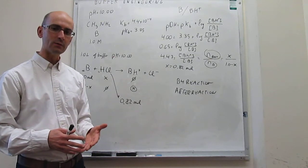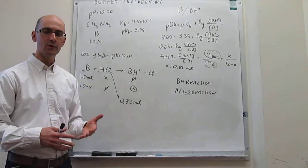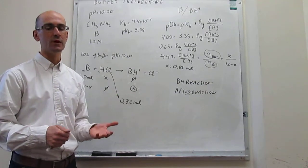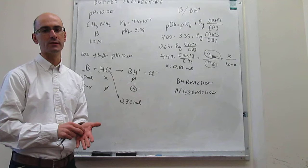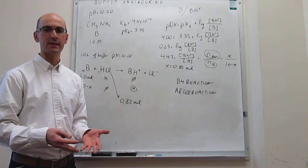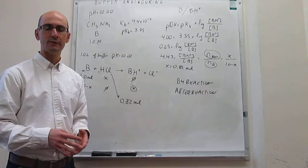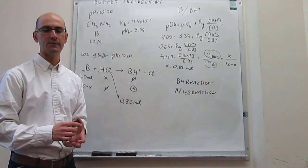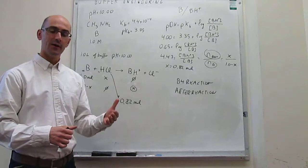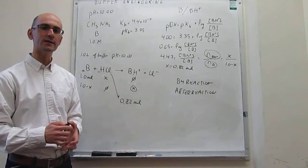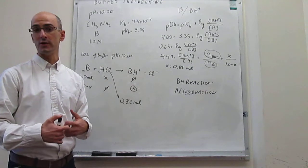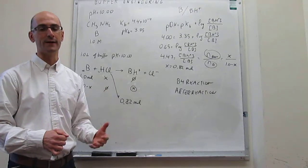An important approximation in this problem is that because we need one liter of buffer solution and we're taking one liter of the original weak base solution, we're assuming that the addition of the 0.82 moles of hydrochloric acid doesn't change the volume at all. That is an approximation since HCl will add some volume, but we neglect that extra volume addition. In summary, we have learned how to generate a conjugate pair in situ for a weak acid or weak base to produce a buffer solution with a specified pH.